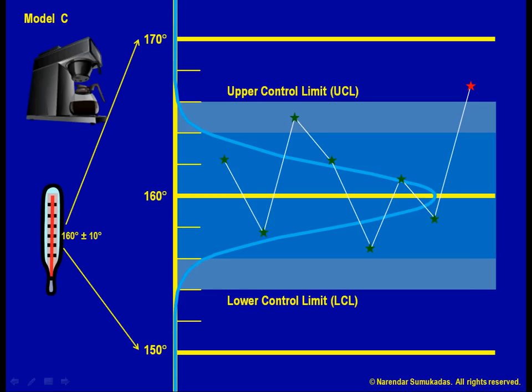In this case, 150 degrees to 170 degrees. The farther away these tolerances are from the mean, the better our chances of meeting them. That is, 6 sigma is better than 5 sigma, which is better than 4 sigma, and so on.